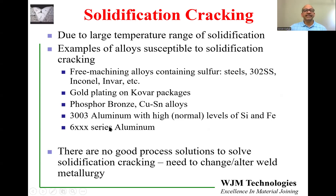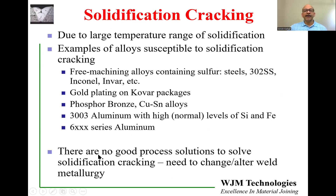The 6000 series aluminum is well known for solidification cracking with virtually any arc, laser, or electron beam welding process. The solution there is to add a filler alloy to compensate for these issues. Importantly, there are no good process solutions to avoid solidification cracking — you cannot increase or decrease the power, weld time, cooling rate, or add cooling blocks on the sides. None of that helps. You have to change the metallurgy.